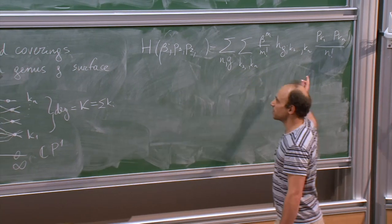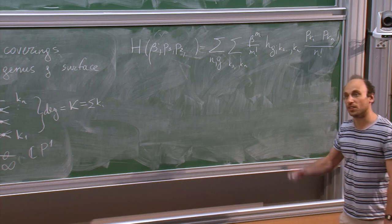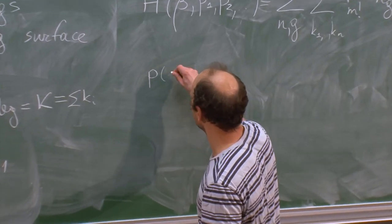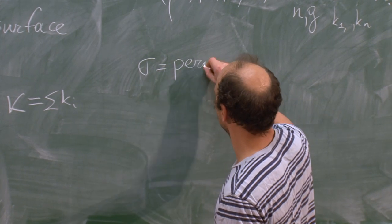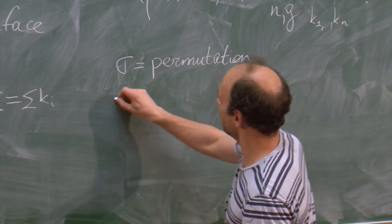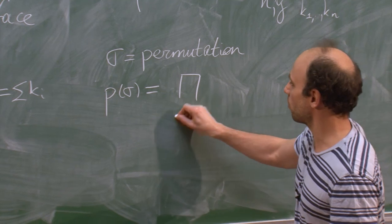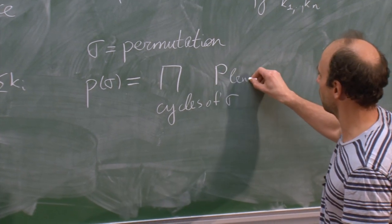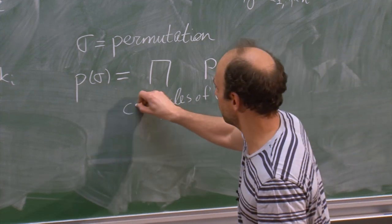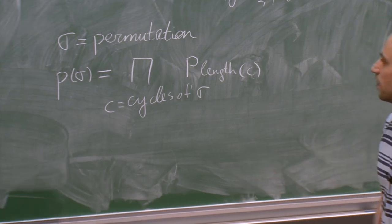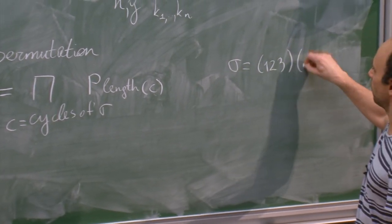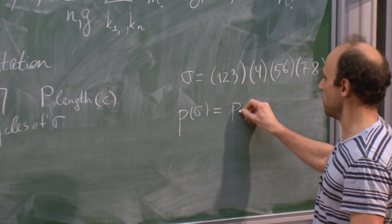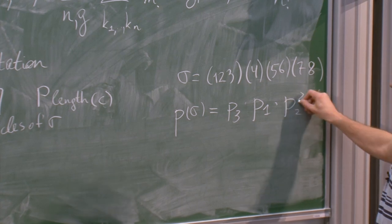Now I write an expression for this function in terms of the representations of the symmetric group. Let me introduce notation: P(σ), if σ is a permutation, is the product over the cycles of σ of P_{length(C)}. So for example if σ = (1 2 3)(4)(5 6)(7 8), then P(σ) = P₃ · P₁ · P₂².